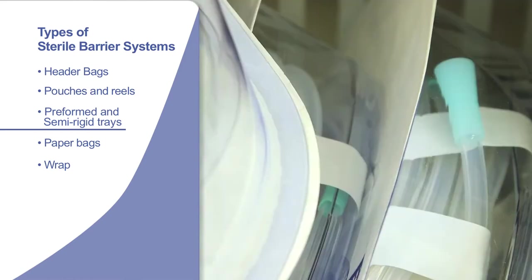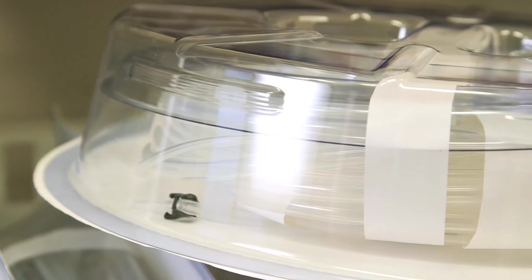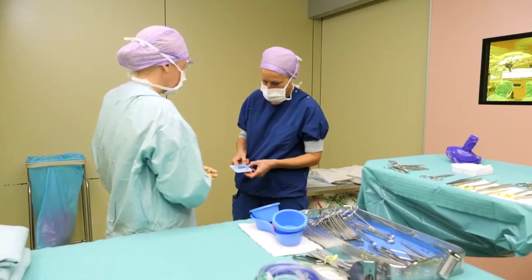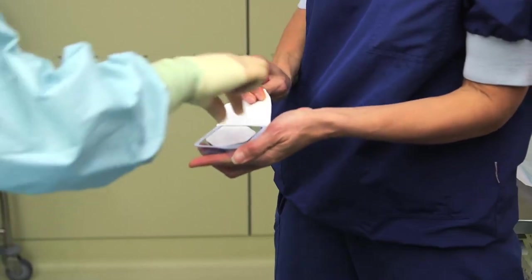Preformed and semi-rigid trays come in a variety of sizes and materials depending on the type of product being packed. The formed tray is typically lidded with a permeable barrier material such as a spun bonded polyolefin non-woven to allow access by sterilizing gases.